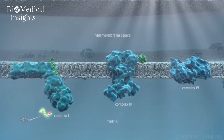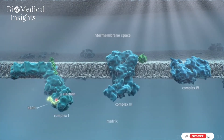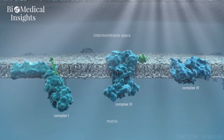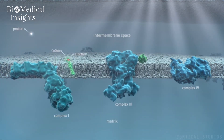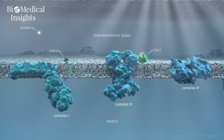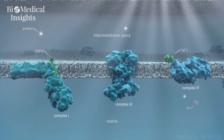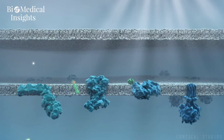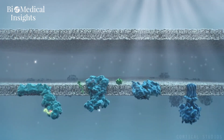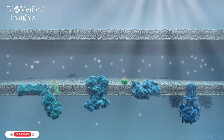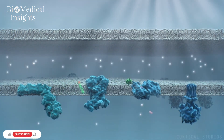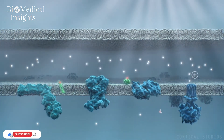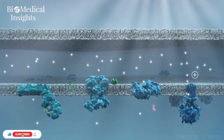Nutrients provide high energy electrons in the form of NADH, which are used by the protein complexes to pump protons from the matrix to the intermembrane space. This continuous pumping creates a proton gradient, where the positively charged protons are attracted to the more negative matrix.